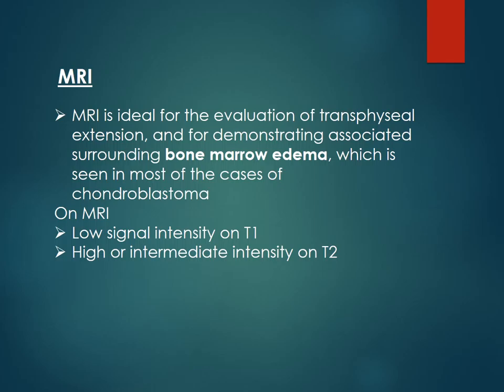MRI is ideal for evaluation of transphyseal extension and for demonstrating associated surrounding bone marrow edema, which is seen in most cases of chondroblastoma. On MRI, it gives low signal intensity on T1 and high or intermediate signal intensity on T2.